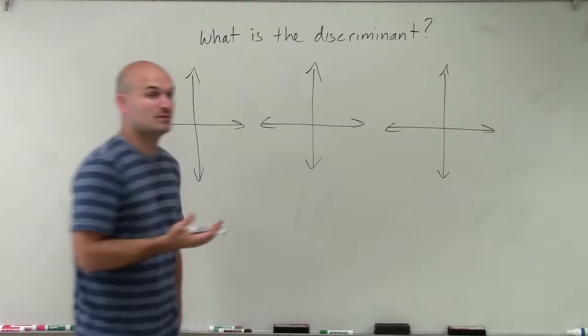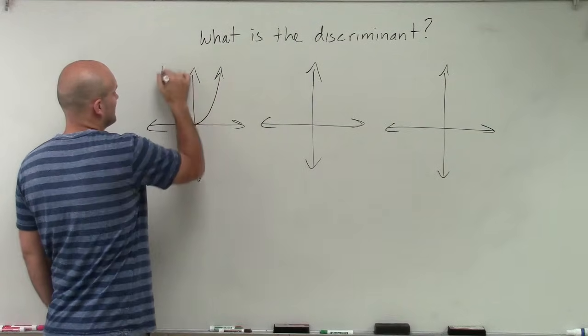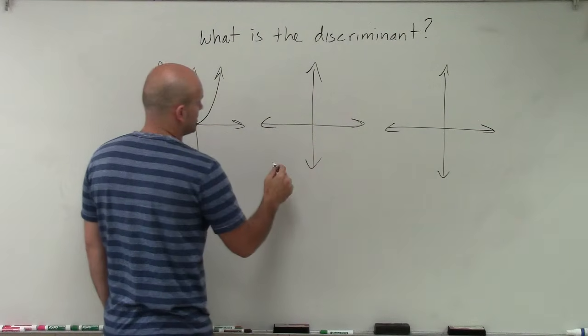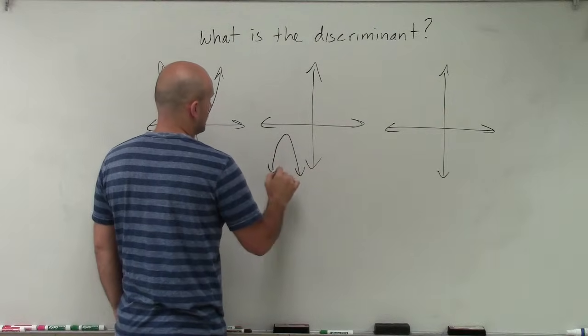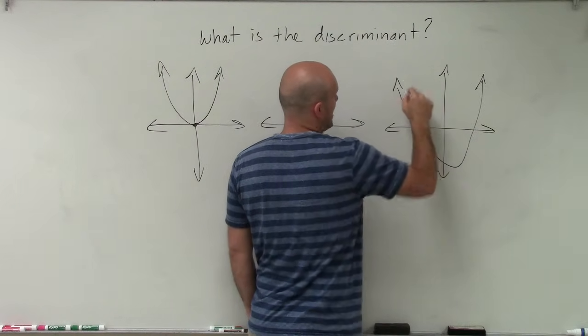OK, for a quadratic equation, we know that shape takes a parabola. So we could have an equation, like the parent graph, where there's exactly one x-intercept. We could have one where there's no x-intercept, and we could also have one where there's two x-intercepts.